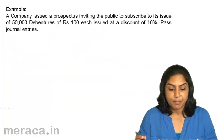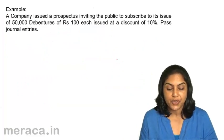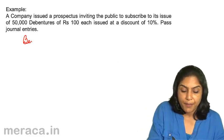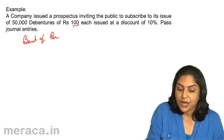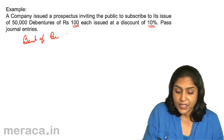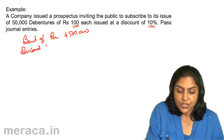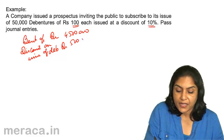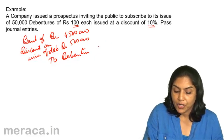Let us consider another example. A company issued a prospectus inviting the public to subscribe to its issue of 50,000 debentures of Rs.100 each at a discount of 10%. In this case, bank account debit — the amount received is only 50,000 into Rs.90 because a Rs.100 debenture was issued at 10% less, so we would receive not Rs.50,00,000 but only Rs.45,00,000. Discount on issue of debentures would be debited for Rs.5,00,000.